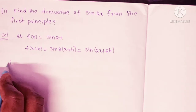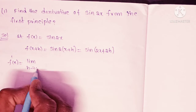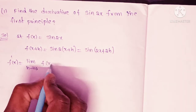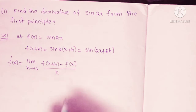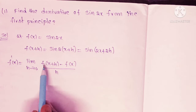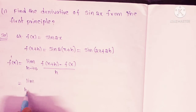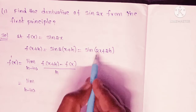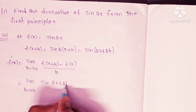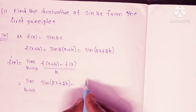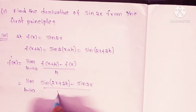The first principle states: f dash of x is equal to limit h tends to 0 of f(x plus h) minus f(x) all divided by h. Substituting, this becomes limit h tends to 0 of sin(2x plus 2h) minus sin(2x), all divided by h.